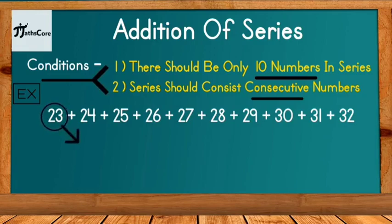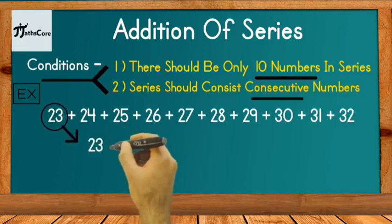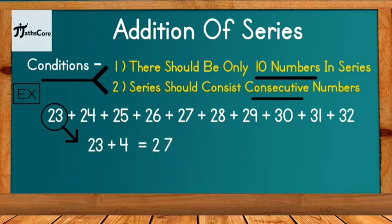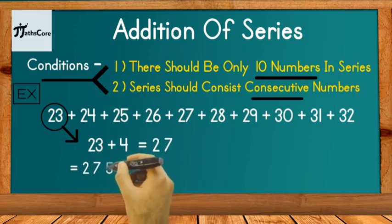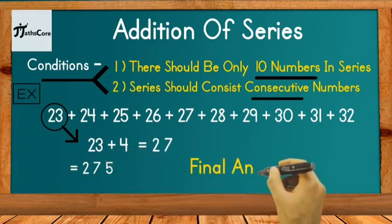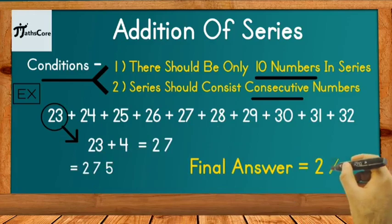So let's take first number 23 here and add 4 in it. 23 plus 4 is equal to 27. Now take this 27 in the next step and write 5 after 27. So this is your final answer 275 which is addition of given series.